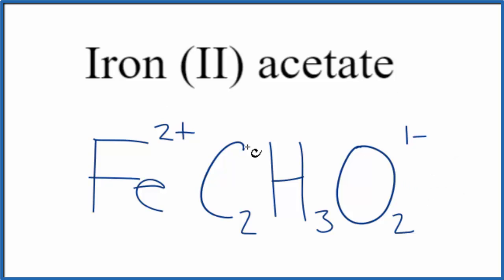So since we have this ionic compound, these charges, they need to add up to zero. So we have a 2 plus here, a 1 minus. We're going to need two acetate ions.